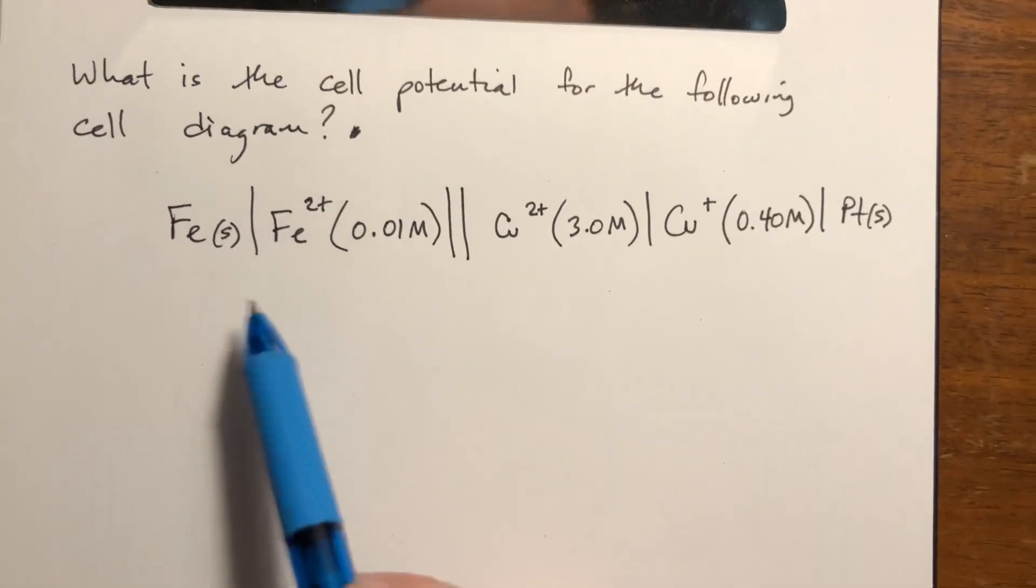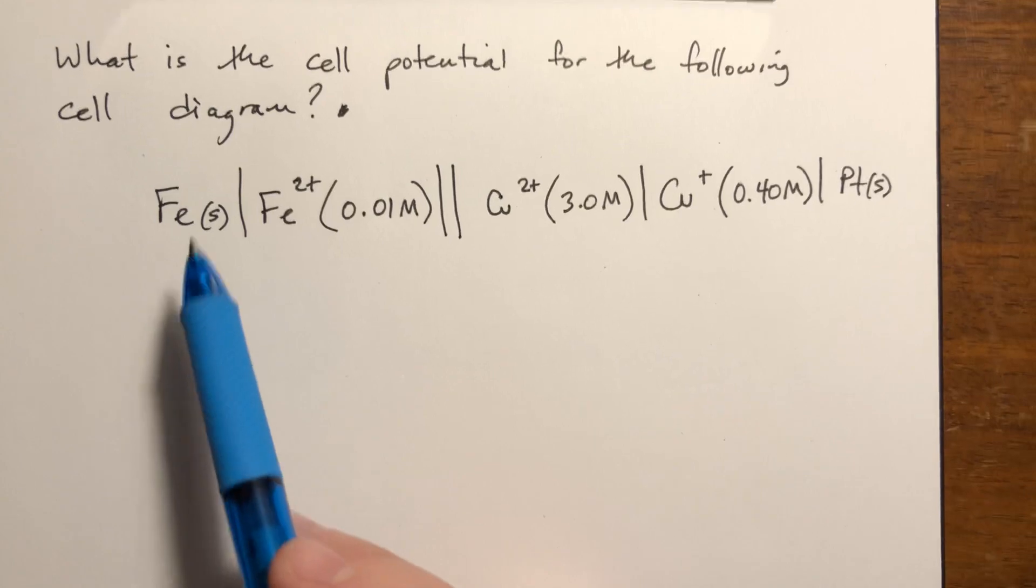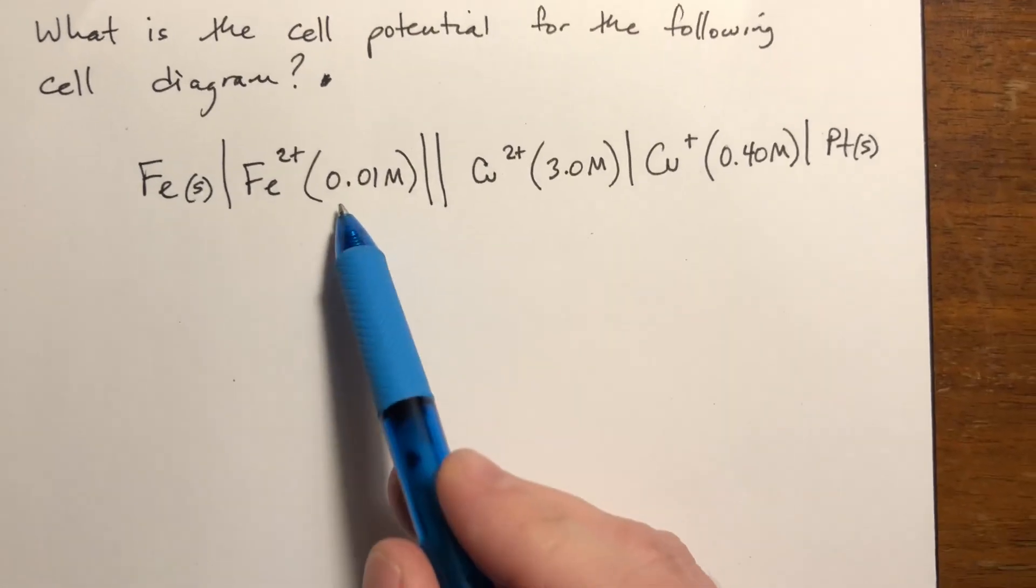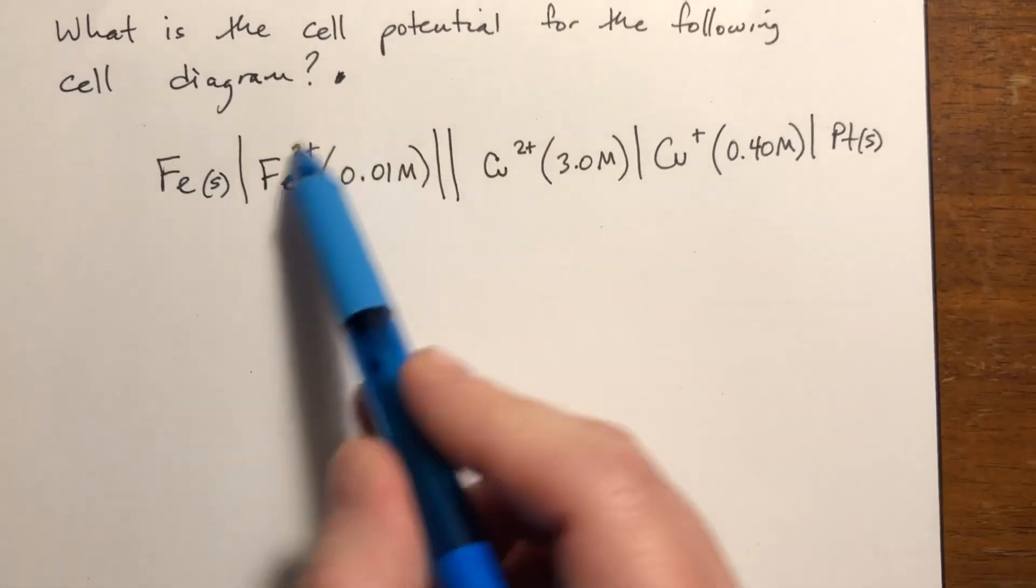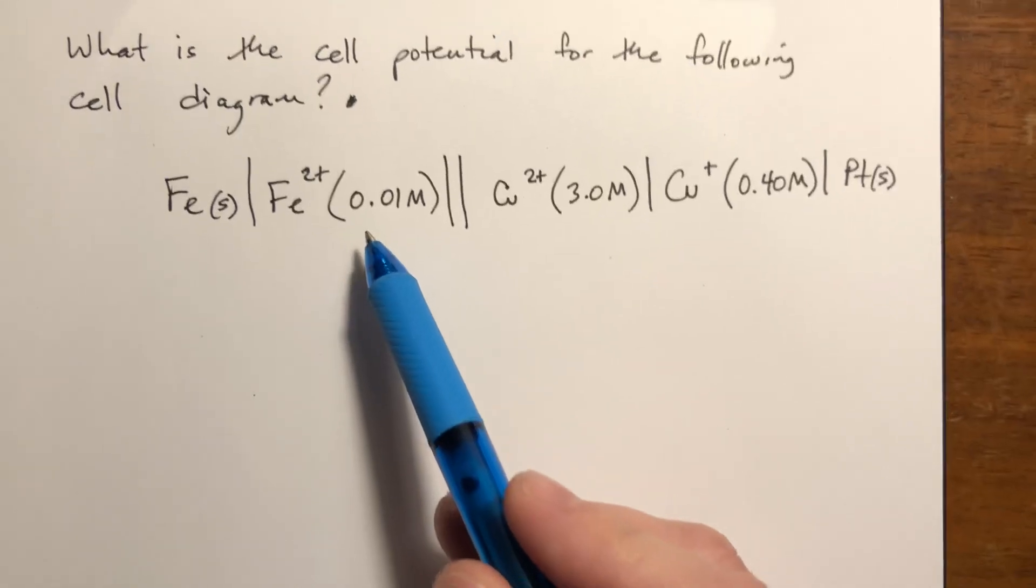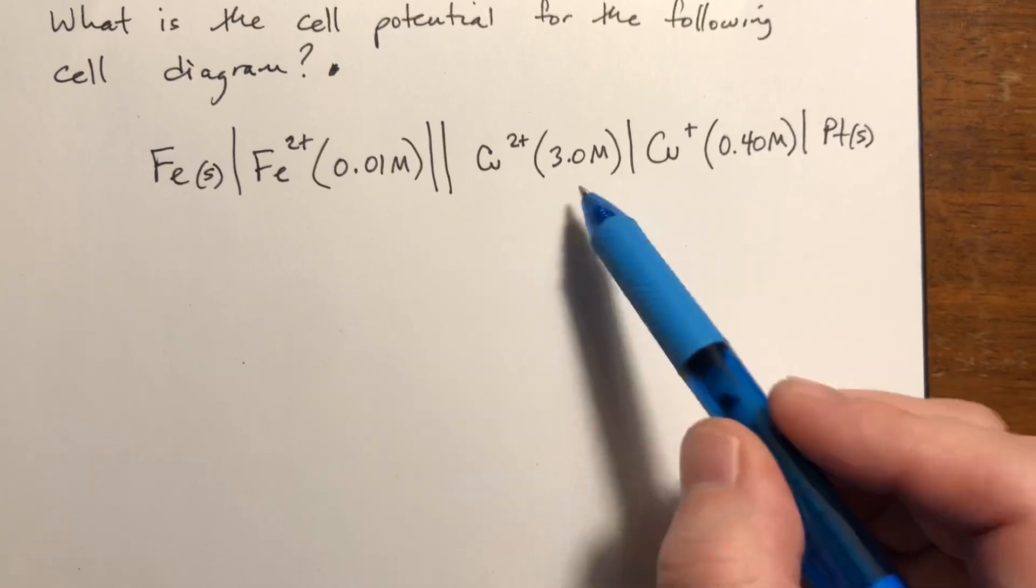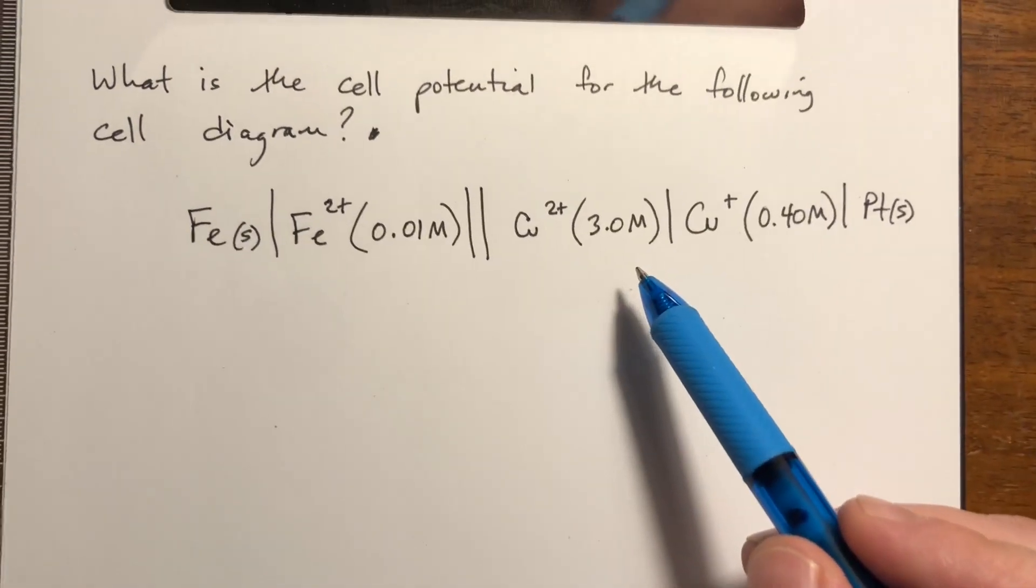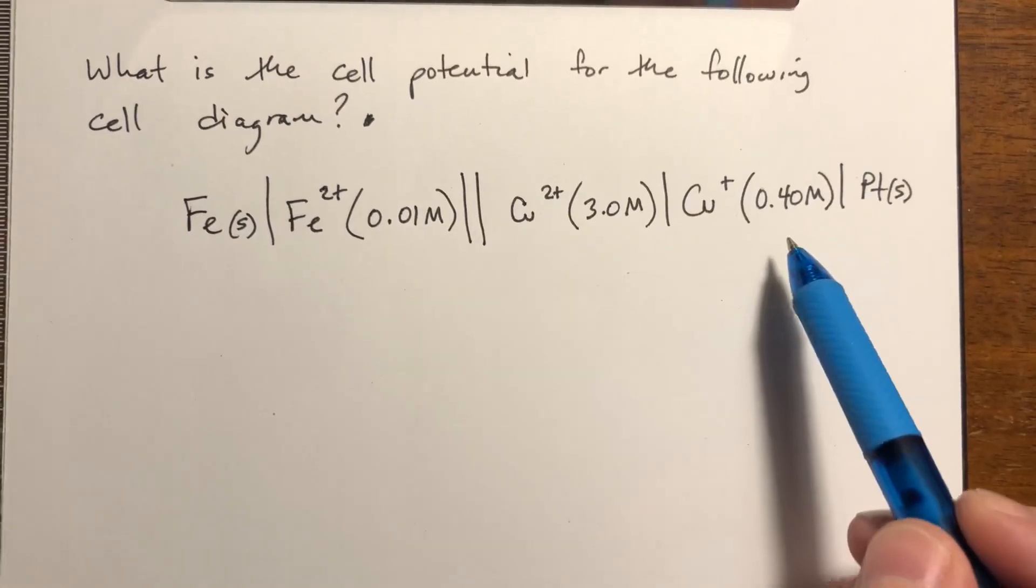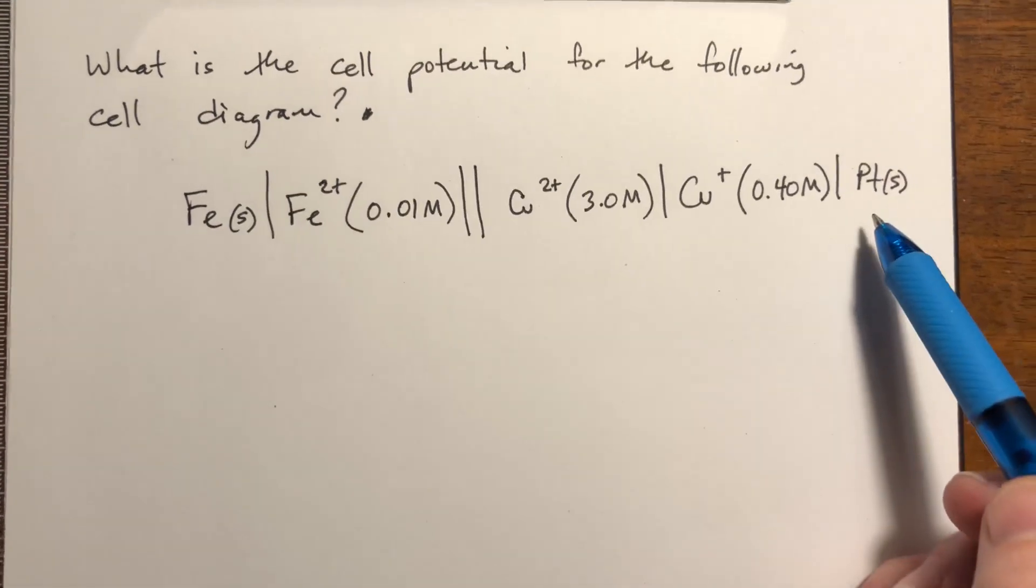So the way to interpret this is we have an iron electrode in a 0.01 molar iron solution, so this is significantly lower than 1 molar, and then we have a copper 2+ and a copper 1+ solution, kind of like we saw in the previous example, but this is at 3 molar and this is only at 0.4, and we still have a platinum electrode.